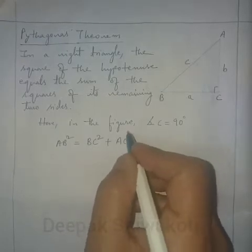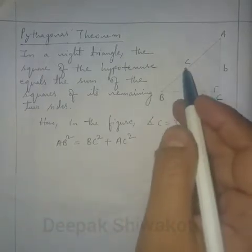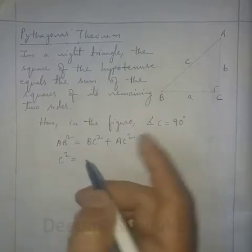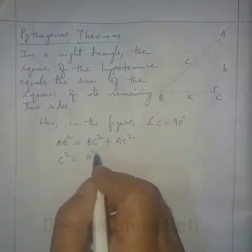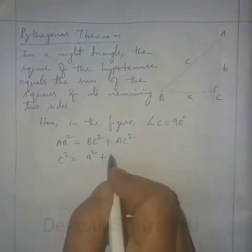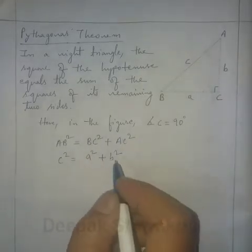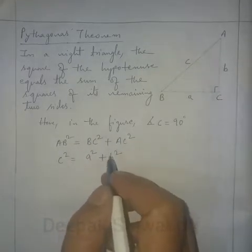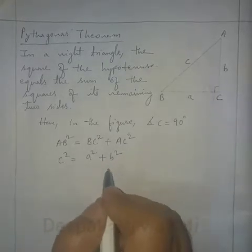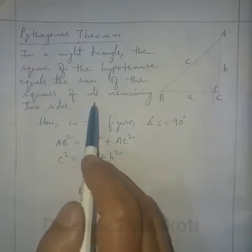This is the theorem. In short, we can write: AB is represented by c, so c square; BC is represented by a, so a square; and AC is represented by b, so b square. We need to remember this relation and the full statement of the Pythagoras theorem.